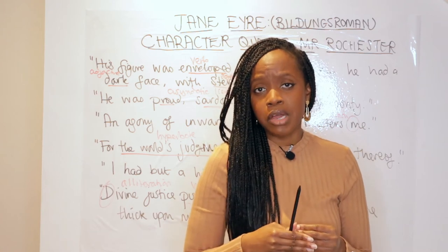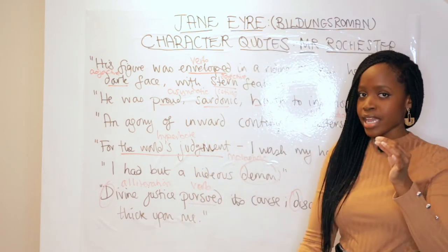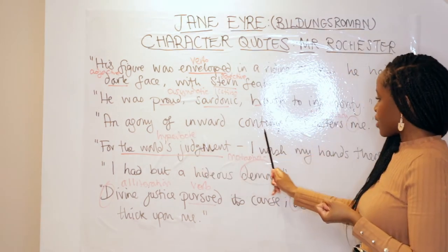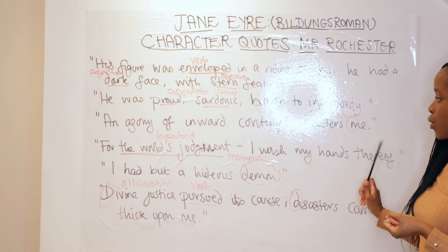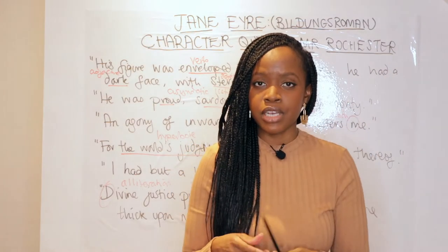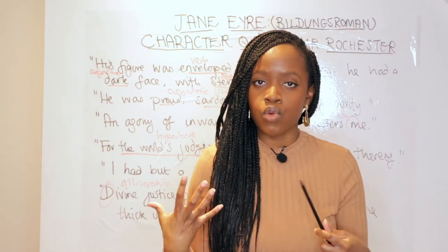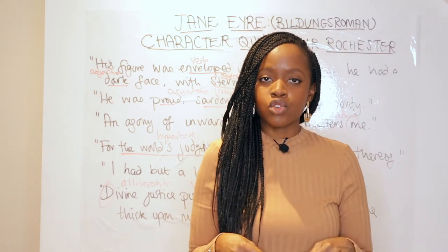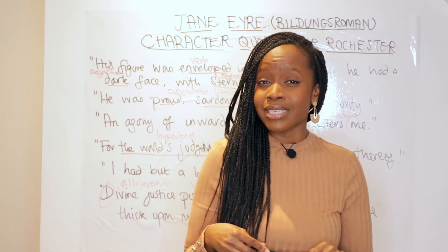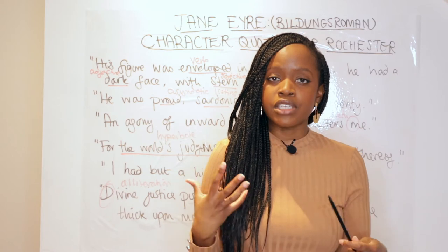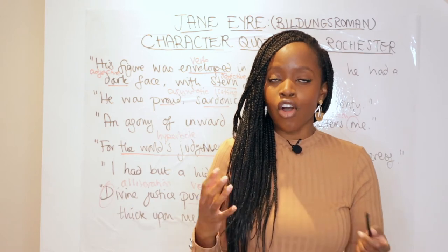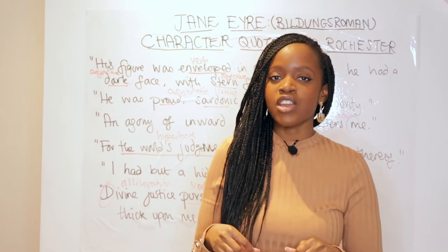The third quotation ties into the inward torment he is experiencing: 'An agony of inward contempt masters me.' The word-level analysis here is the alliteration of 'masters me.' He is confessing this to Jane but doesn't tell her what is causing this torment — which is his marriage to Bertha, a woman from the Caribbean he was unable to divorce, and was almost forced into the marriage by his father for a large inheritance.